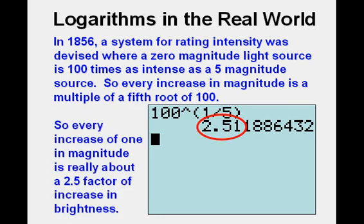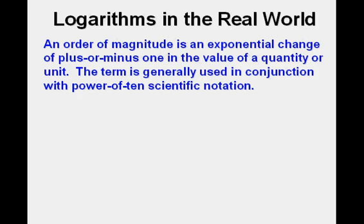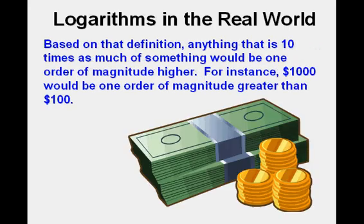Logarithmic functions are used to calculate ages by radioactive dating. An order of magnitude is an exponential change of plus or minus 1 in the value of a quantity or unit. The term is generally used in conjunction with power of 10 scientific notation. Based on the definition, anything that is 10 times as much of something would be one order of magnitude higher. For instance, $1,000 would be one order of magnitude greater than $100.